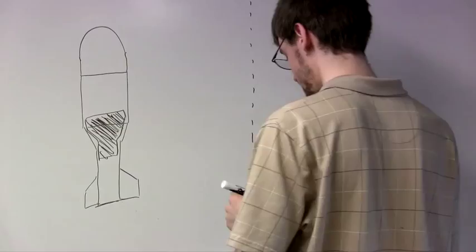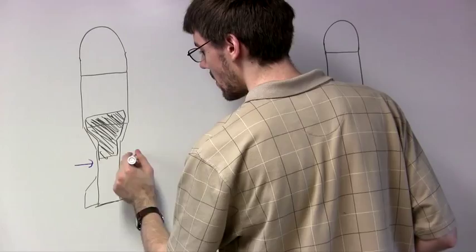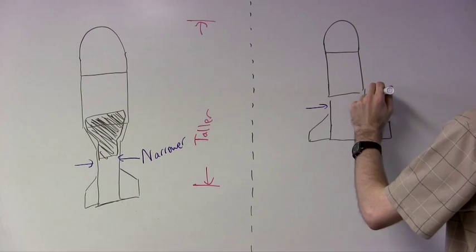Bear in mind that using a transition will make the rocket longer by several inches because we can't store anything inside them. Rocket simulation software can help us figure out which trade-off is the best for any particular design.